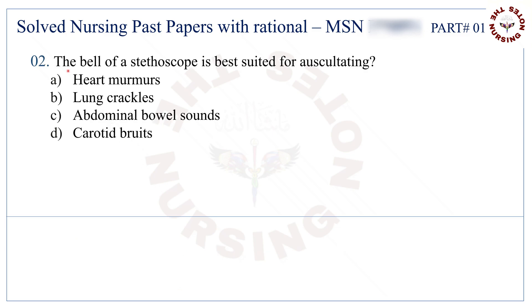Question number 2: The bell of a stethoscope is best suited for auscultating. The correct answer is C — abdominal bowel sounds.